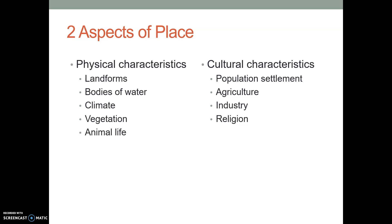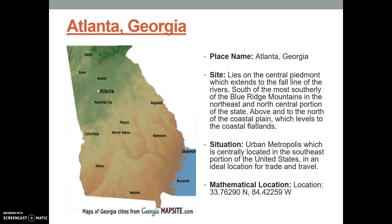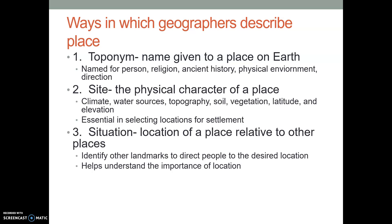When you combine physical and cultural characteristics, you get a sense of place and what it's like in a specific area. There are three important terms you're responsible to know. Number one is toponym — the name given to a place on earth. Hillgrove High School is the toponym of this school. Marietta is the toponym of a city. Powder Springs is the toponym.